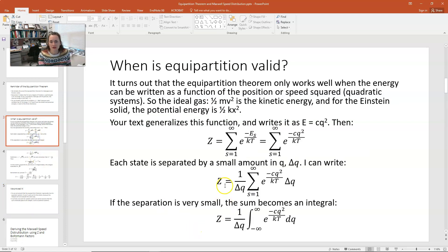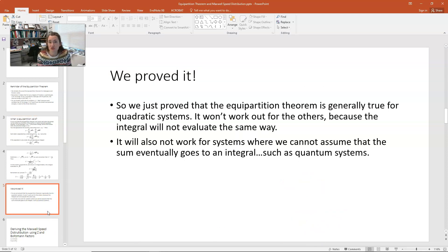It's also not going to work when we can't assume that that summation eventually goes to an integral. Remember, we made that step here between lines 2 and 3 of our proof. We said this summation goes to an integral because the q's aren't very far apart. But if you've got a quantum system and the temperature isn't very high and a lot of other issues, then you can't make that step, and so it's not going to be generally valid for them. So just bear in mind when your assumptions are true in any given proof. Okay, I hope that made sense. I hope you enjoyed it, and I'll see you in class.